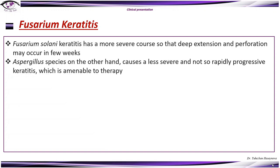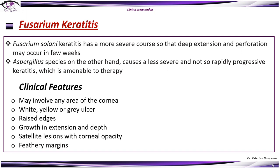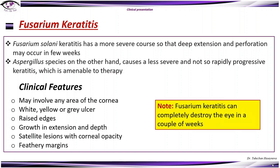Fusarium keratitis has a more severe course, so that deep extension and perforation may occur in a few weeks. Aspergillus species, on the other hand, causes a less severe and not so rapidly progressive keratitis and can be successfully treated. Clinical features may involve any area of the cornea — a white, yellow, or gray ulcer is very characteristic. The ulcer can also be raised at its edges, growing in extension and depth. Satellite lesions with feathery margins are also characteristic signs.